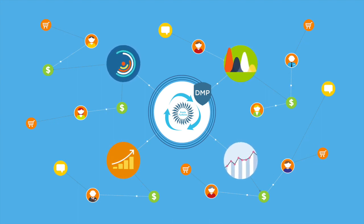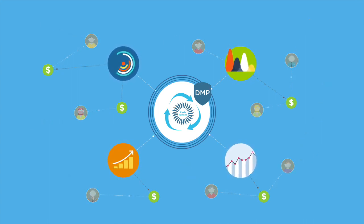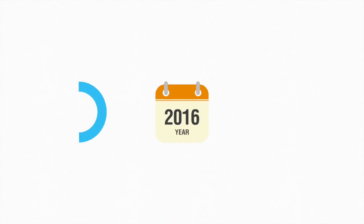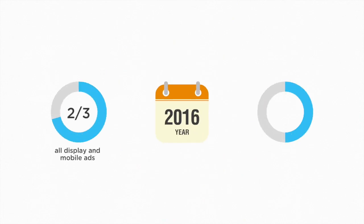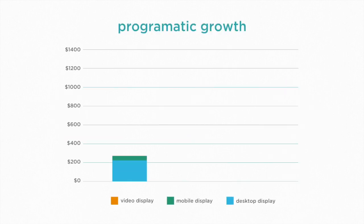This entire circuit — from publisher to exchange and back — takes fractions of a second and doesn't disrupt the user experience. The improved efficiency and targeting accuracy this solution offers is why in 2016 more than two-thirds of all display and mobile ads, and half of all video advertising, will be bought programmatically.